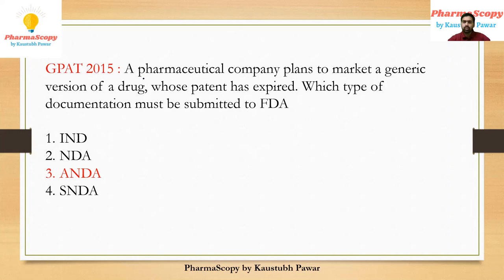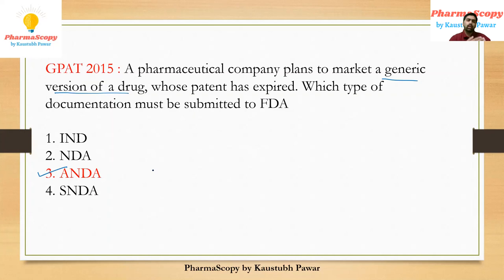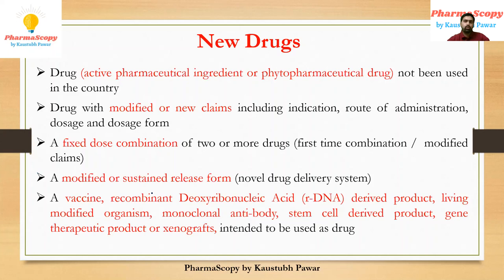The second type is the New Drug Application (NDA), which is for a new drug being produced by a company that wants to get approval through USFDA. The third type is the Abbreviated New Drug Application (ANDA), which is for generic medicines. When the new drug application patent gets expired, other companies can enter the same market and market the same medicine under generic medicine names through the ANDA application. In GPAT 2015, there was a question on this concept.